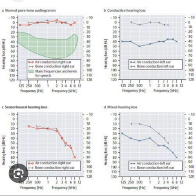Audiograms are most useful for objectively identifying deficits in hearing by looking at how sound travels through the auditory system via air conduction or bone conduction. Air conduction measures sound transmission from the outer ear through the middle ear and into the inner ear, where signals are sent to the central nervous system (CNS) for auditory processing. In contrast, bone conduction measures transmission only from the inner ear to the CNS.